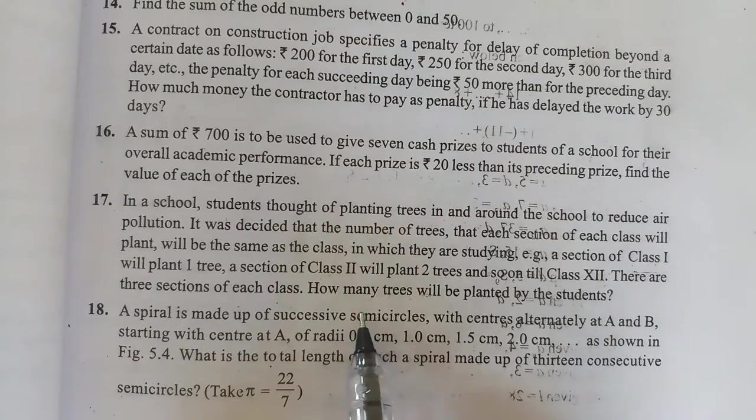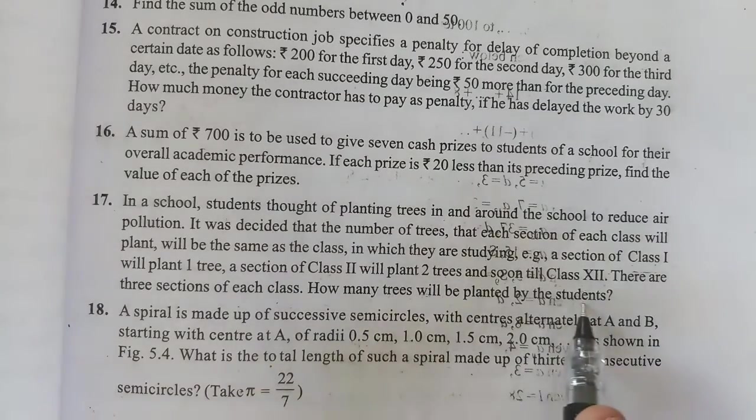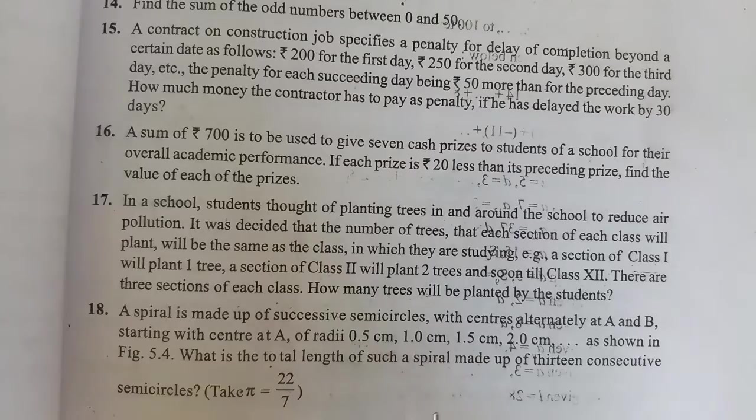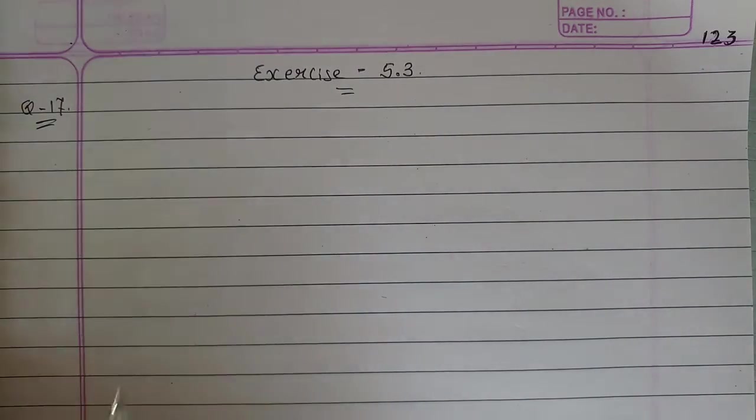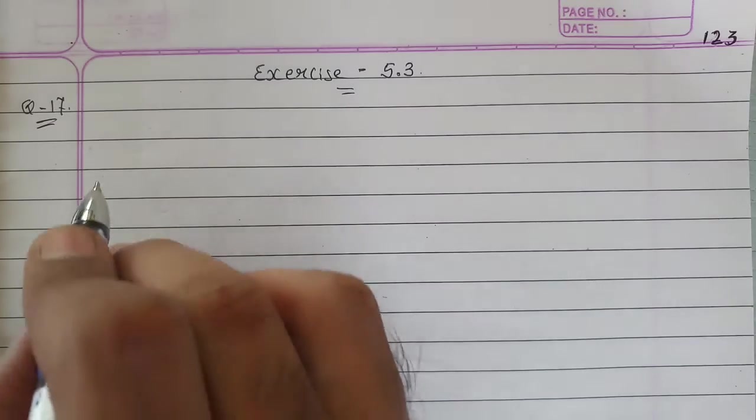We have to find that in total, students have planted how many trees. In short, we have to find the SN. So, let's do it. First of all, we have to create the AP.